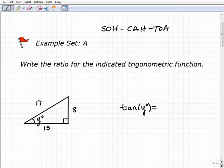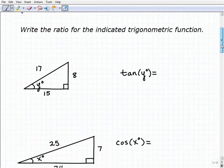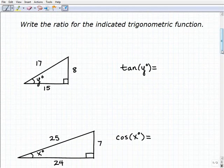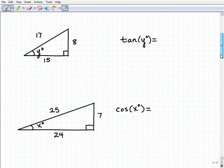This is a mnemonic, a little memory aid to help us remember the ratios, these trigonometric ratios: sine, cosine, and tangent. So let's go ahead and start practicing applying SOHCAHTOA by setting up these ratios with the following.